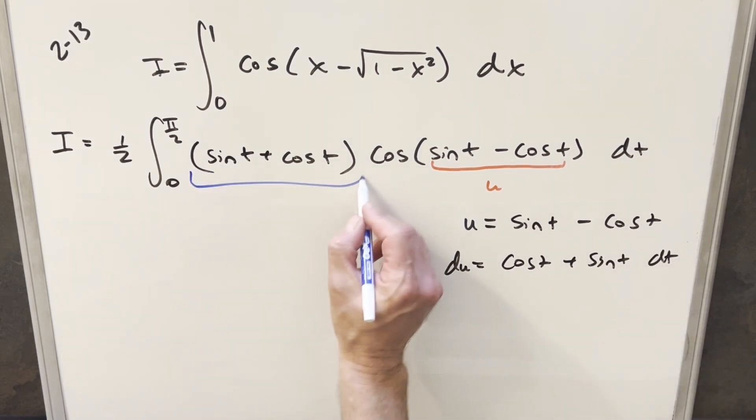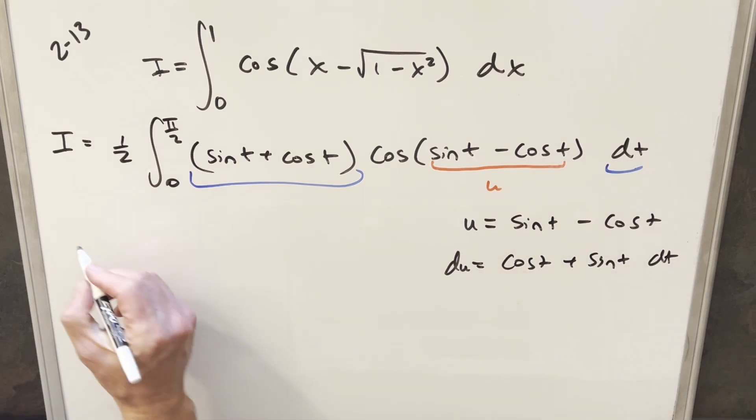But for this, we actually have this right here, with the dt right here, so I'm just going to go ahead with this substitution now. So we still have our half up front. First,